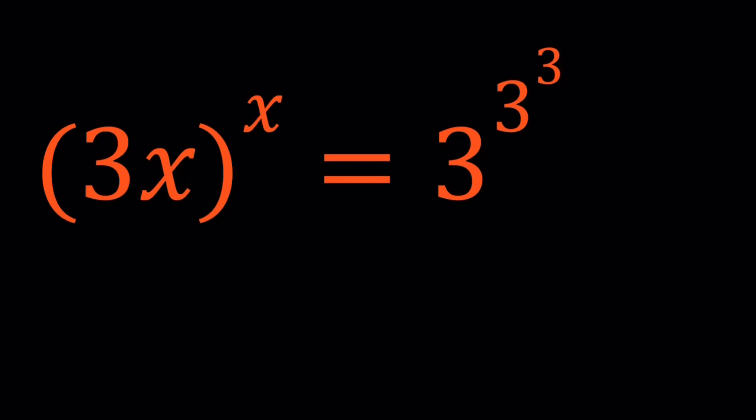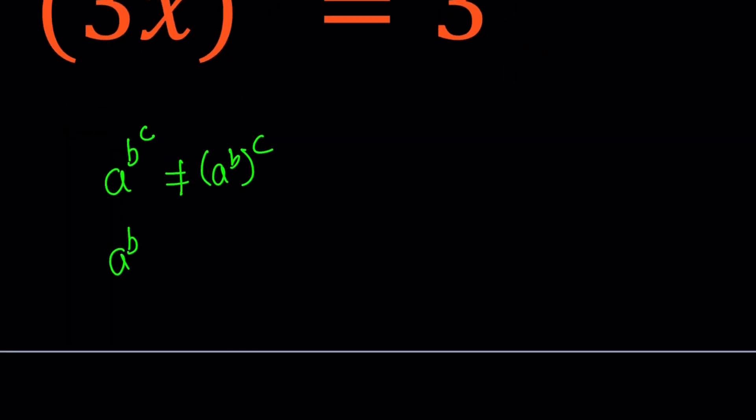First of all, let me make clear that when you have an expression like a^b^c, kind of like a tower, it doesn't mean a^b then to the power c. It actually means that you have to take the b to the power c together. So that's how you group when no parentheses are used.